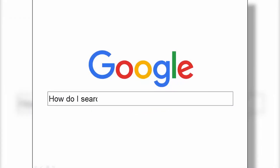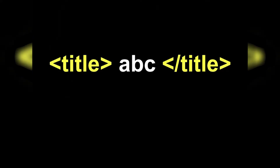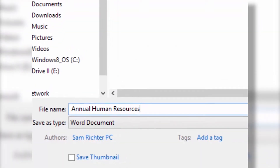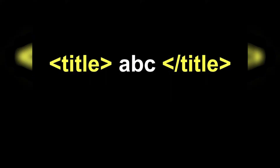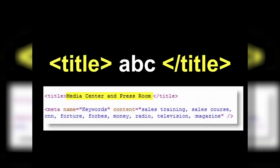Searching for words or phrases within the title of an online web page or document is a great way to really hone in on your search. Every web page has a title, and people usually save those titles with very logical names, placing words or phrases within what are called title tags. You can actually search within those title tags using what's called an intitle colon search.